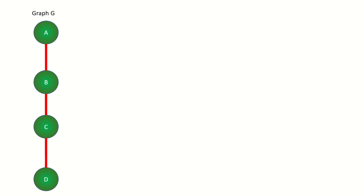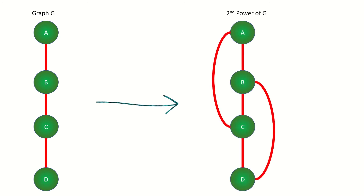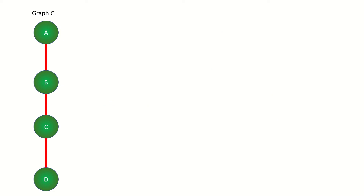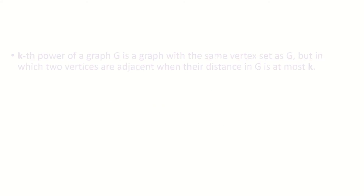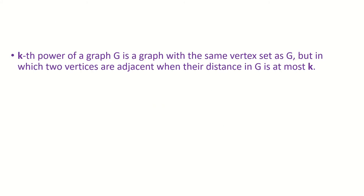The second power of an undirected graph G is itself a graph with the same vertex set as G, but in which two vertices are connected if their distance in G was at most two. Similarly, the third power of a graph G has the same vertex set as G, but vertices are connected if their distance in G was at most three. Generalizing, the kth power of an undirected graph G is itself a graph with the same vertex set as G, but in which vertices are connected when their distance in G is at most k.